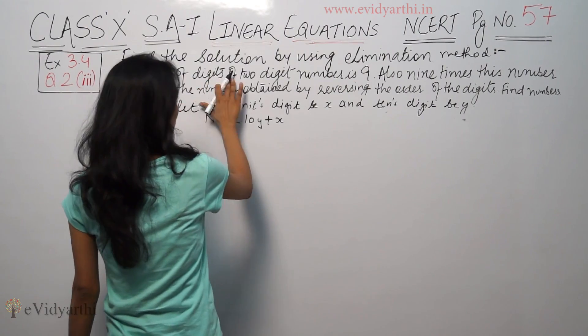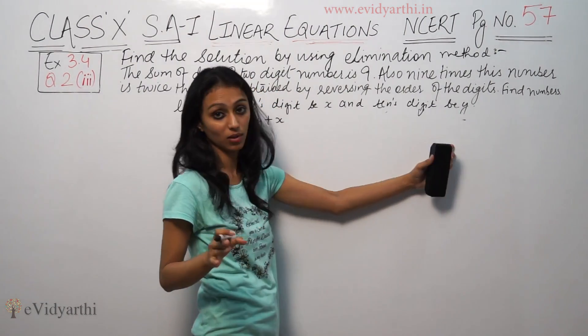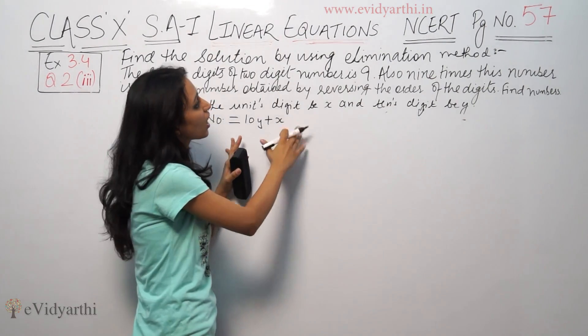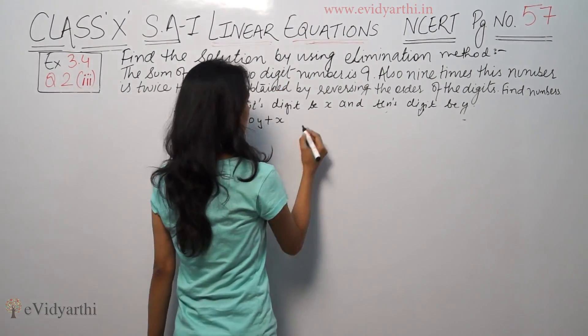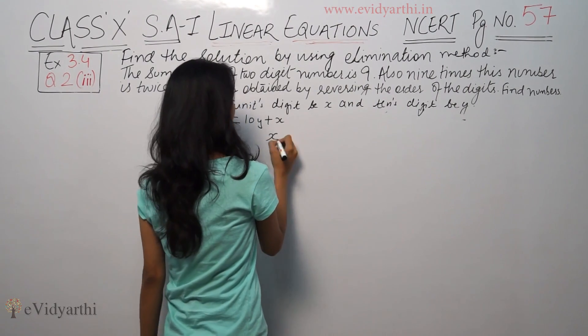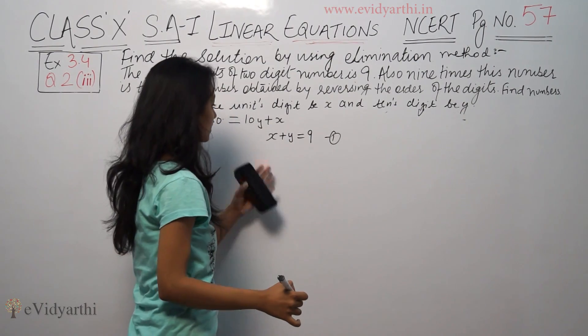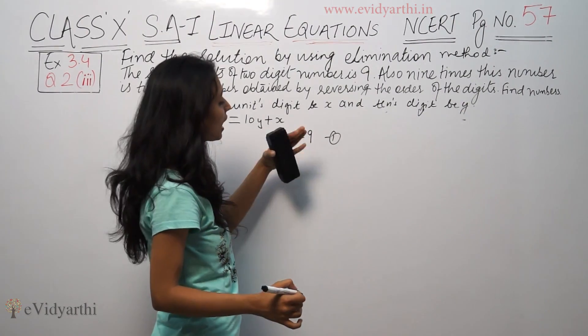Now, the first condition says the sum of the digits is 9. The sum of digits means x plus y. The sum of digits is 9, so what I am saying is x plus y equals 9. This is our first equation.